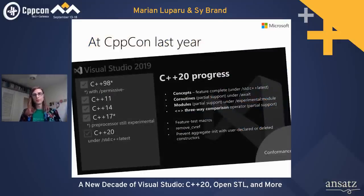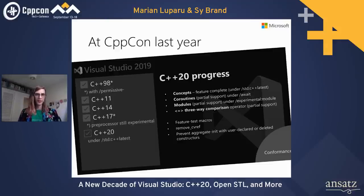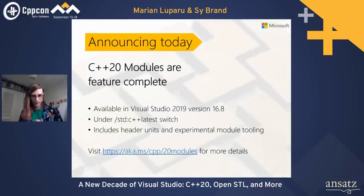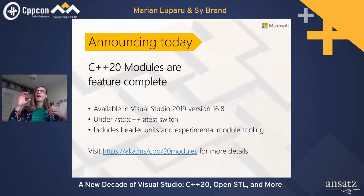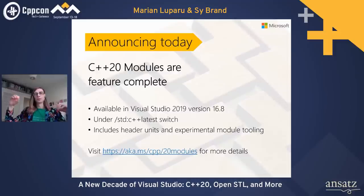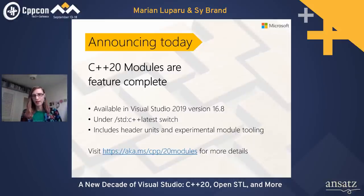Our main conformance focus has been C++20. We can announce that C++20 modules are now feature complete, including header units changes and experimental tooling. If you're using MSBuild, it will look at dependencies between your modules and build them in the right order — even across projects. This is available under the /std:c++latest switch. See aka.ms/cpp20modules for all the details.